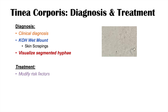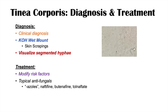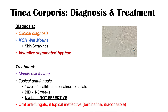Treatment involves first modifying the risk factors. Then we can use topical antifungals — azoles are often first line, but you could also use naftifine, butenafine, or tolnaftate, typically once to twice a day for one to three weeks. Importantly, nystatin is not effective for tinea corporis. If topical antifungals are not effective, we move to oral antifungals like terbinafine or itraconazole.